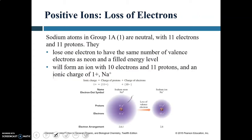Sodium in group 1A is neutral with 11 electrons and 11 protons. On the outer shell it has only one valence electron. When that electron is lost to another atom, sodium has 10 electrons — the electron configuration of a noble gas — and still 11 protons. Ten electrons and 11 protons make a positive ion with a charge of +1.